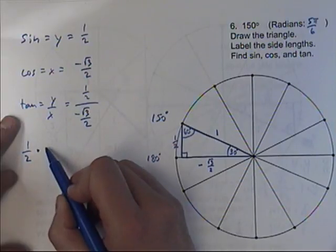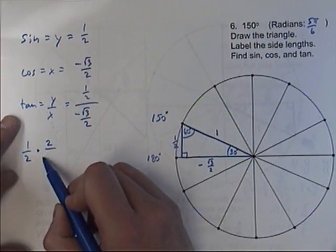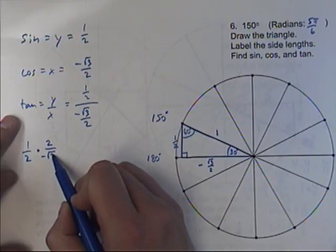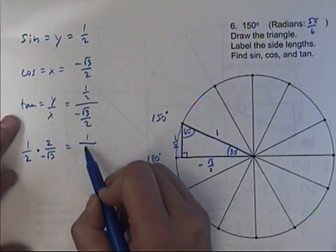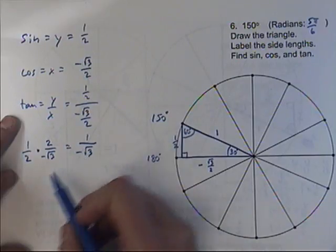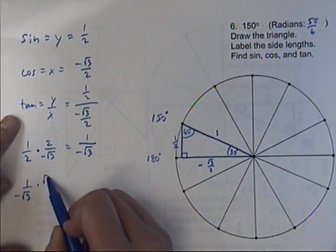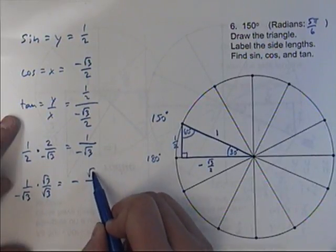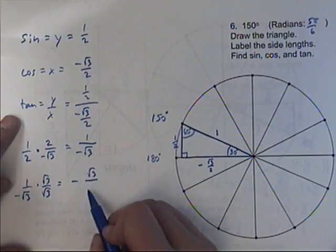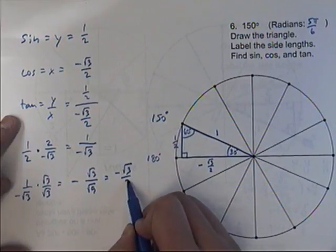To simplify this, we take our 1 half and multiply it by the reciprocal — 2 over negative root 3. The 2's are going to cancel, which gives us 1 over negative root 3. And I'm going to multiply on the top and the bottom by the square root of 3, which gives us negative square root of 3 on the top over the square root of 9 on the bottom, which is just 3.